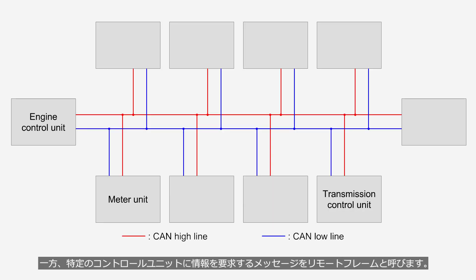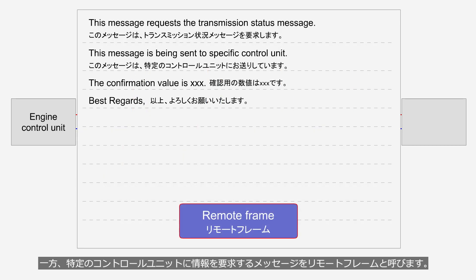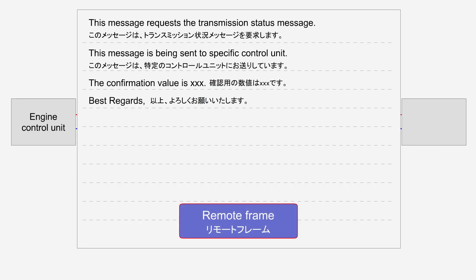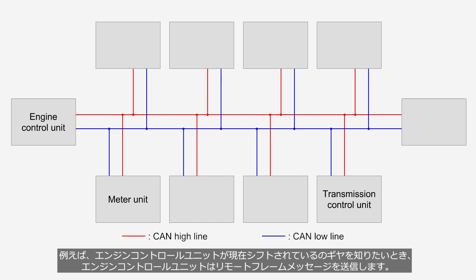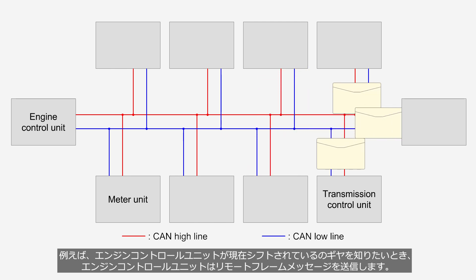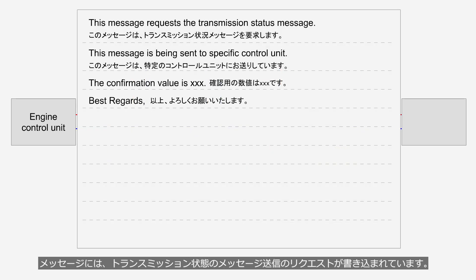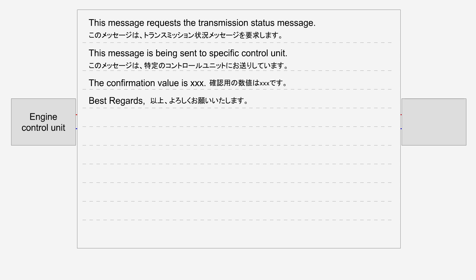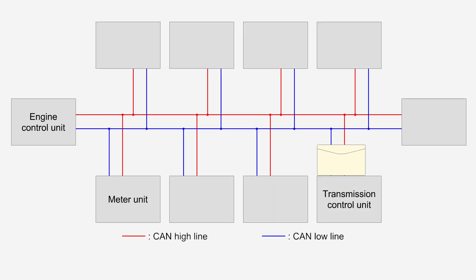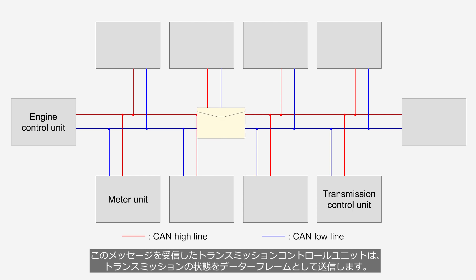On the other hand, a message that requests information from a specific control unit is referred to as a remote frame. For example, when the engine control unit wants to know the currently shifted gear, the engine control unit transmits a remote frame message. This message includes a request for the transmission status. When the transmission control unit receives the message, it transmits the transmission status message as a data frame.